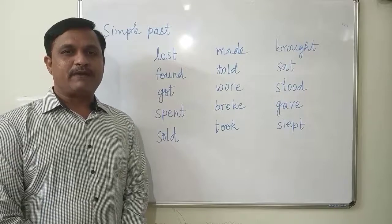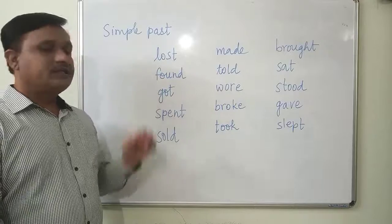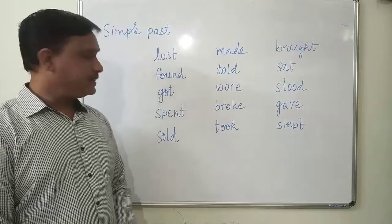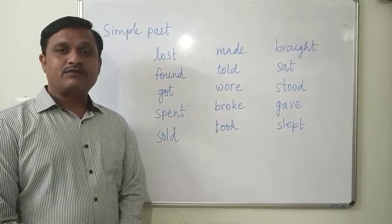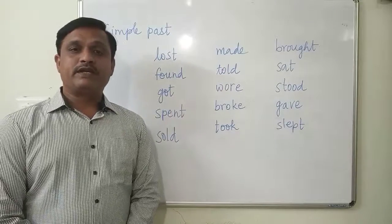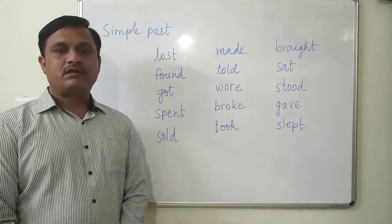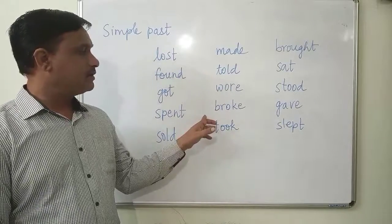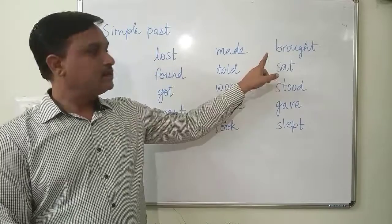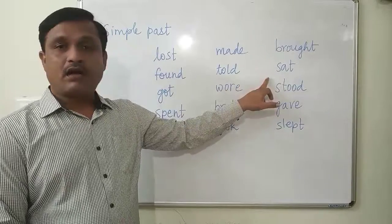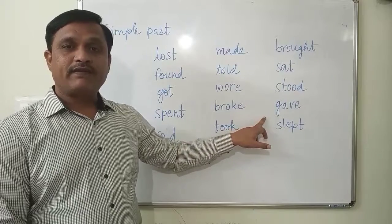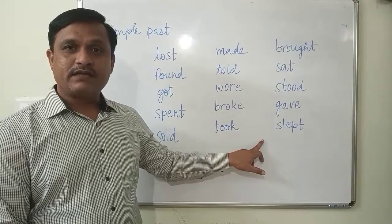Let us study these examples: I lost my pen yesterday. She found my pen. I got a prize. I spent thousand rupees yesterday. She sold her car. I made beautiful paintings. She told me a story. He wore a t-shirt. The thief broke the window. I took him to the garden. She brought some vegetables. I sat on the floor. She stood there silently. I gave five rupees to him. I slept early yesterday.